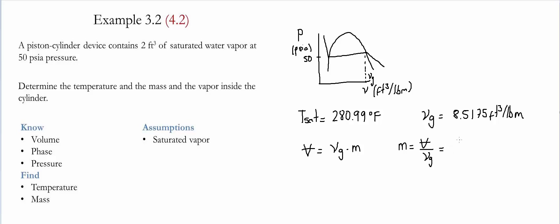The volume is given to be 2 ft³, and we divide it by 8.5175 ft³/lbm. This value gives us 0.235, and the ft³ units cancel. Therefore, the unit that we have is going to be pound mass, which is the unit for mass in this particular case.